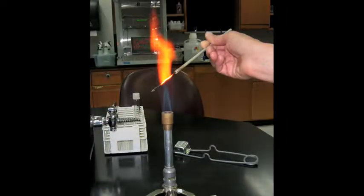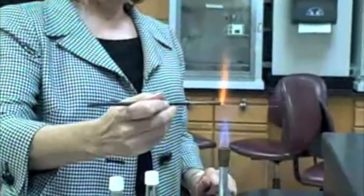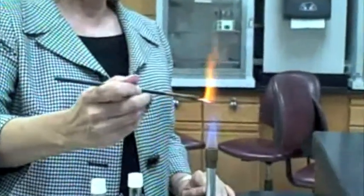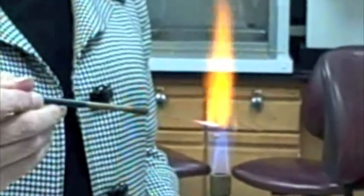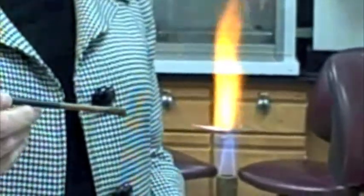First, you need to sterilize your inoculating loop by moving it through the flame. This should be done from the base of the loop all the way to the tip. It is most efficient to do this in the hottest part of the flame, namely the tip of the inner light blue flame. Be sure that the entire wire gets red hot.